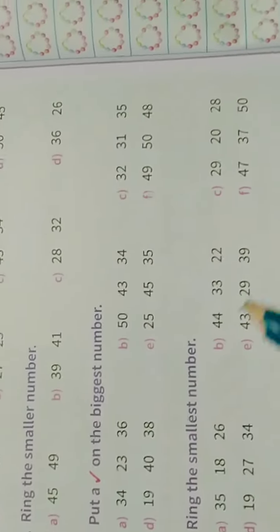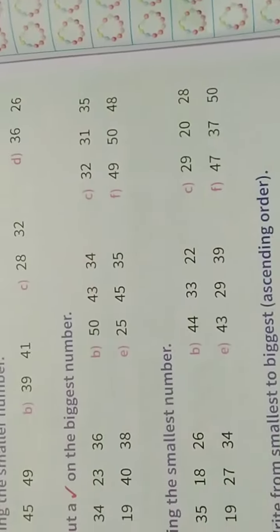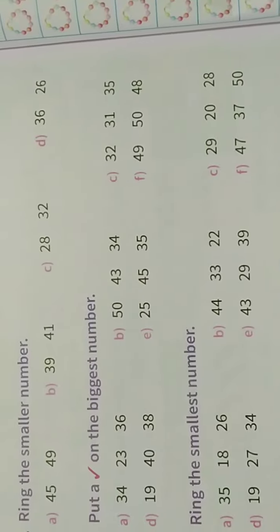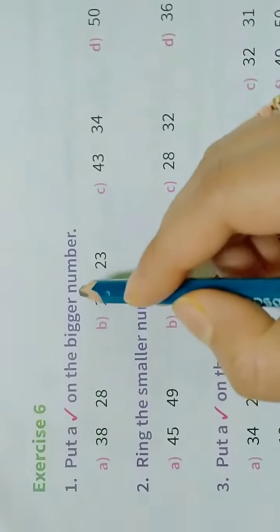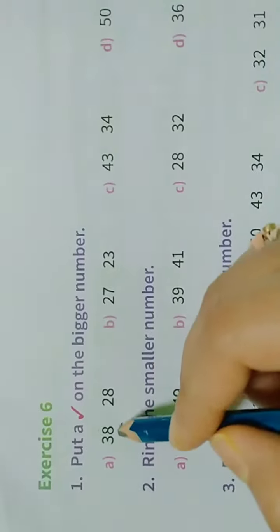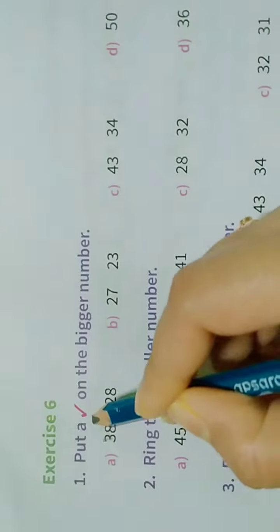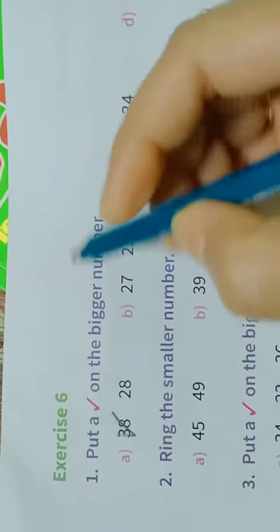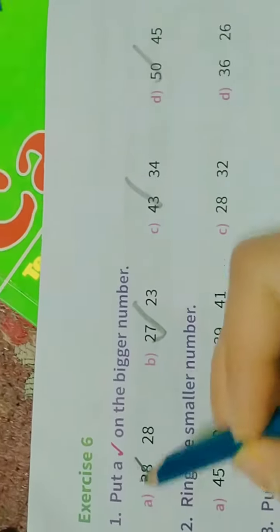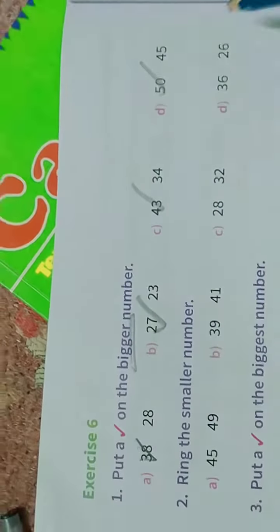Good morning dear children of class 1, it's your math classwork from term 1. So let's start page number 94. Put tick on the bigger number. Which is bigger, in between 38 and 28? 38. Then 27 and 43, and 34 to 43.